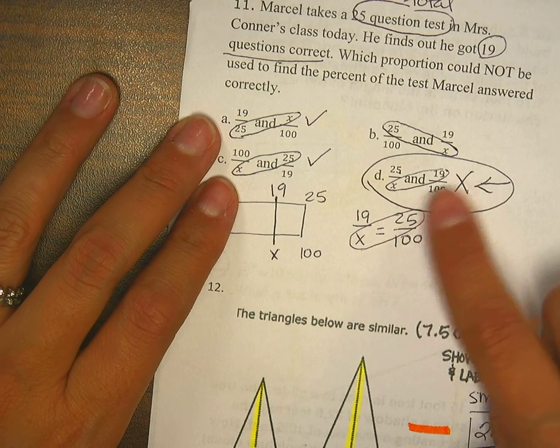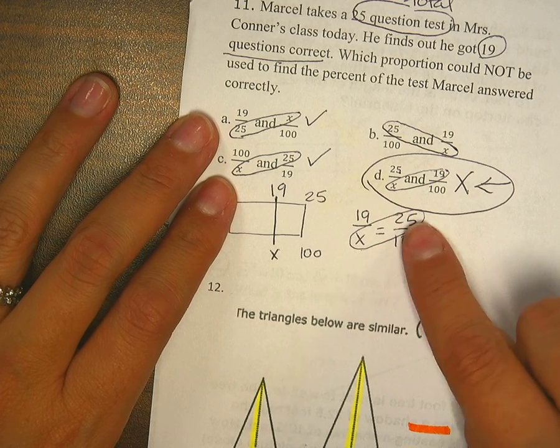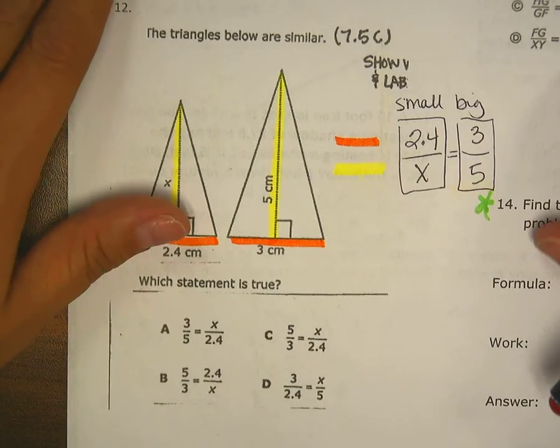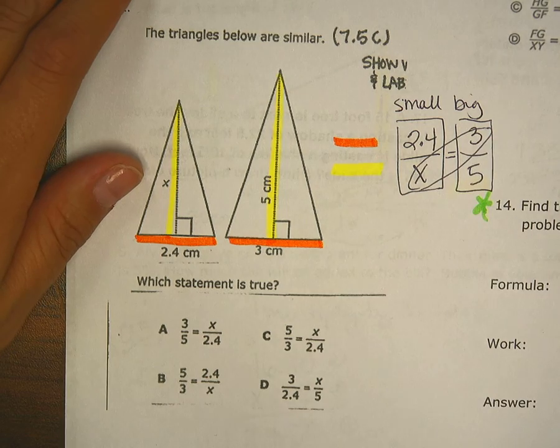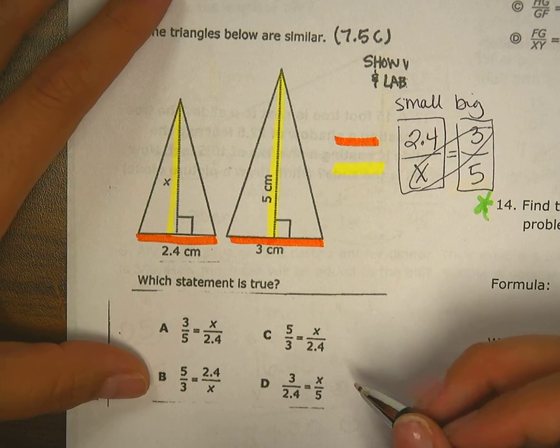Remember what we talked about in question 11, that no matter how I set it up, we still have to look for the same diagonal. It's the same thing here. 3 and x are diagonal from each other, so we have to look and see if we have 3 and x diagonal.